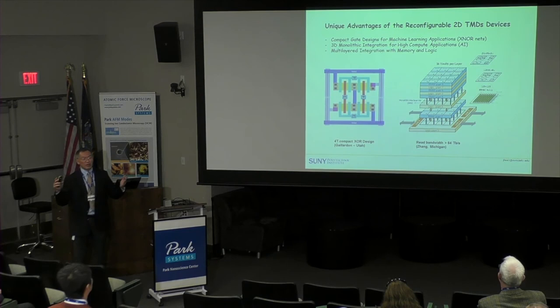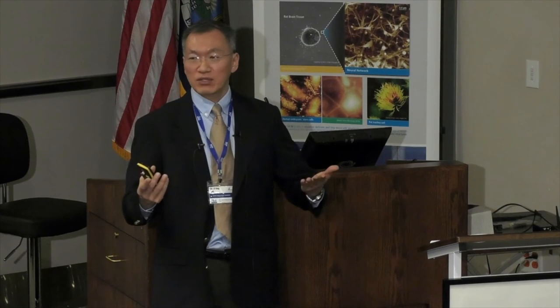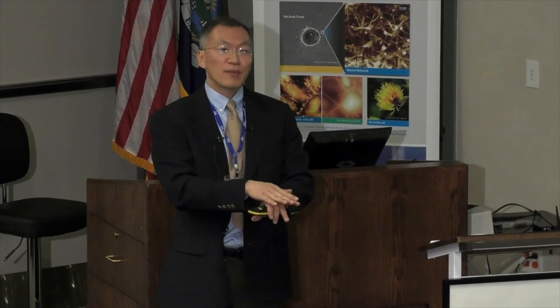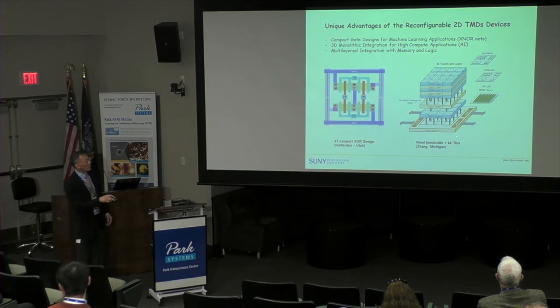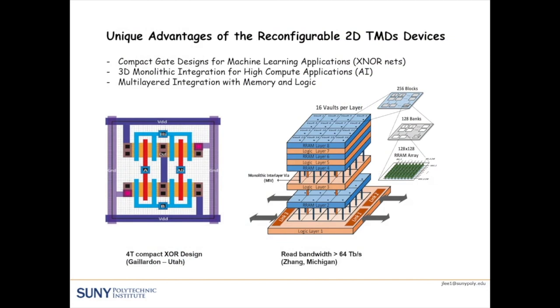One approach we're pursuing is 3D monolithic integration. Moore's law increases functionality by shrinking transistors and increasing transistor density, but another way is to stack transistors vertically — without relying completely on scaling alone. By embedding memory and alternating between memory and logic layers, you can increase read bandwidth tremendously. Without any additional power, we can achieve 64 terabytes of read bandwidth by reducing parasitics and co-locating memory and logic. This is one of the motivations for looking at 2D materials.